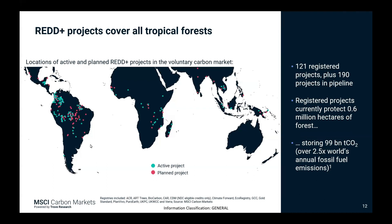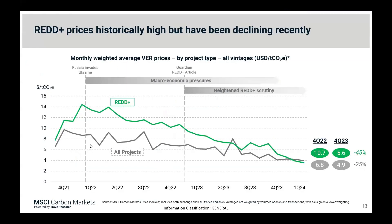REDD+ prices in the VCM have historically been high but have been declining recently, due to macroeconomic pressures as well as heightened REDD+ scrutiny. In Q4 2022, average REDD+ prices were $10.70 versus a market average of $6.80. One year later, REDD+ prices had dropped 45% to $5.60, whereas the market average price only dropped 25% to $4.90.